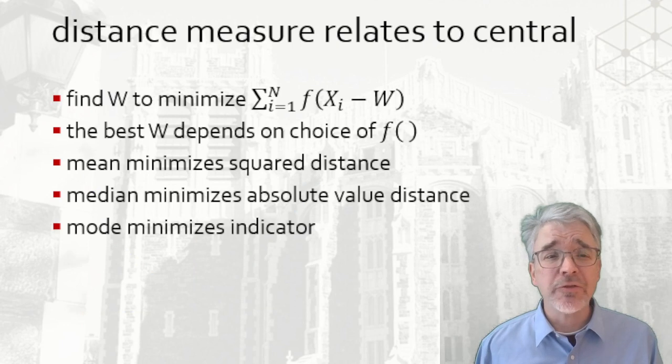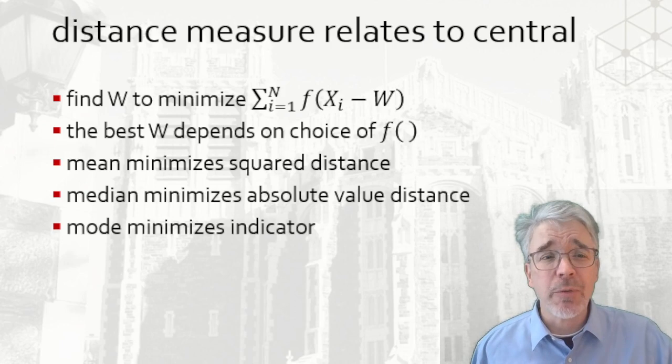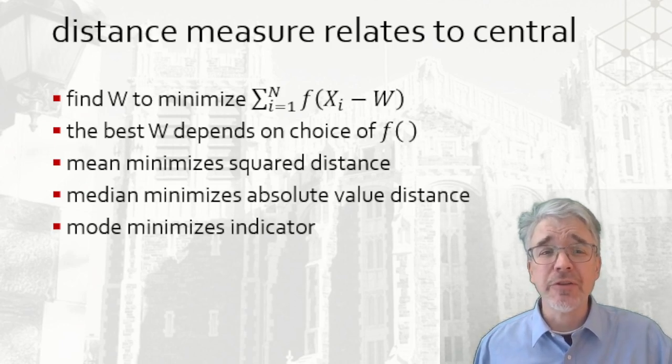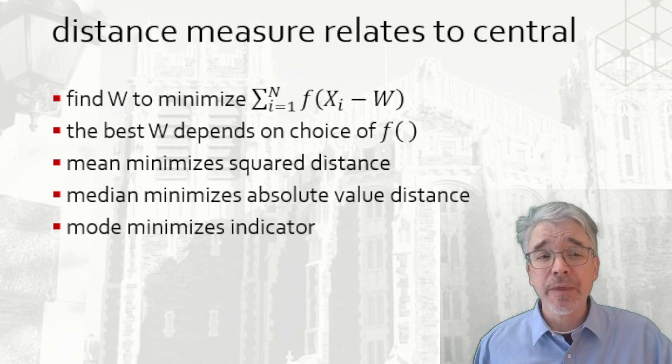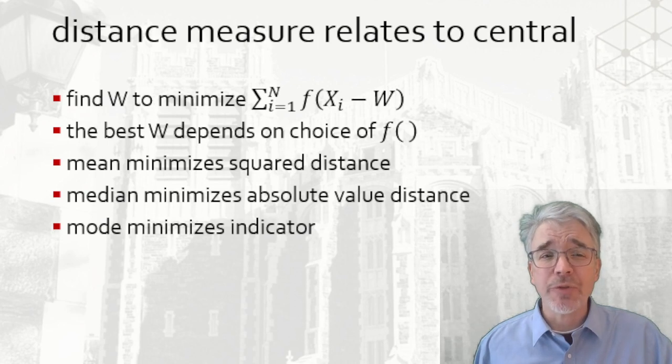There is a relationship between the distance measure we select and the central parameter. For example, suppose I want to find some number W that minimizes a measure of distance of that number W from each of the observations, so I want to minimize sum over N of f(xᵢ - W). If you use the absolute value function, then setting W to the median would minimize the distance. If we use the squared function, then setting it to the average would minimize the difference. So there's an important connection between the average and the standard deviation, just as there's a connection between the median and the absolute deviation.